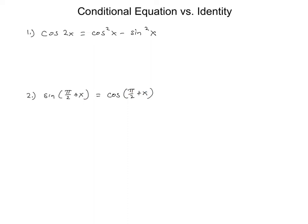Next we look at conditional equations versus identities — we need to determine if one side of the equation can be transformed into the other. For the first one, I'll use the fact that cosine 2x equals cosine(x + x). By the cosine sum formula, that's cosine x times cosine x minus sine x times sine x, which gives cosine²x − sine²x. So this first one is an identity.